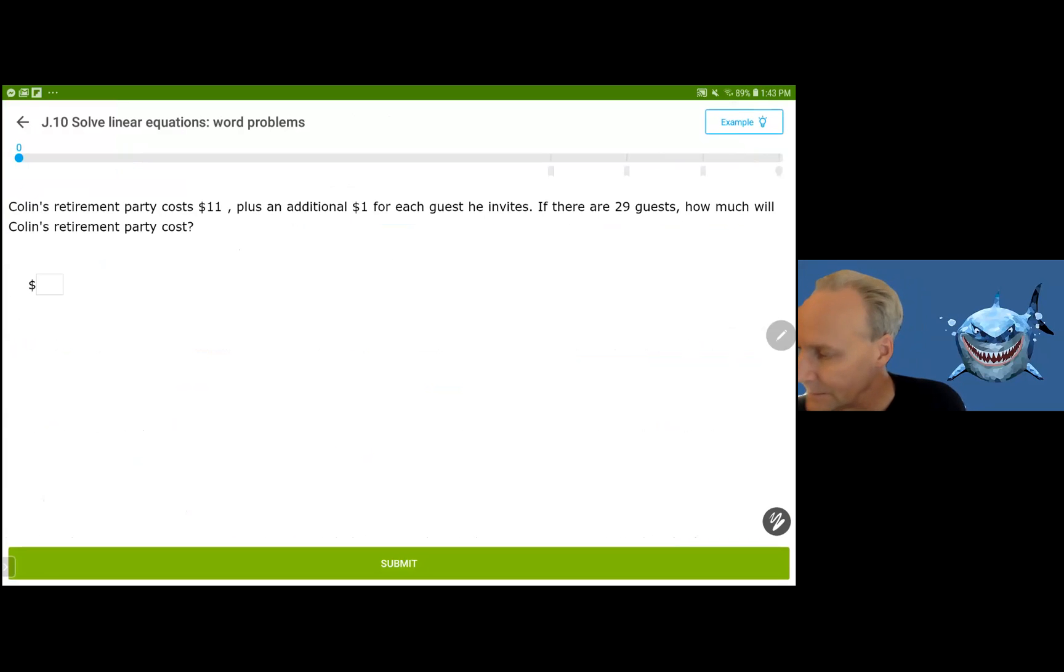It says, Colin's retirement party costs $11 plus an additional $1 for each guest he invites. If there are 29 guests, how much will Colin's retirement party cost? Basically, this is a linear function where one is the rate at which he's charged per guest. And it says that the $11 is just a flat fee. So this is going to be, if you write it directly, 11 plus 1X for the number of guests. I kind of like G in this case. And this is the cost of the retirement party. So in general, we call this F maybe of G. It's a function of how many guests he invites.